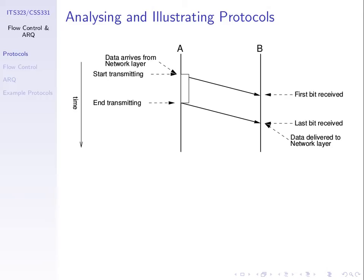When the user presses send at some time, it triggers the protocol to start transmitting a frame. The transmission of that frame is drawn as a rectangle. This rectangle means a frame is being transmitted from A going to B during that period of time. The frame has a number of bits and it takes some time to transmit — the transmission time equals data size divided by data rate. We start transmitting here, and after some time we finish transmitting.